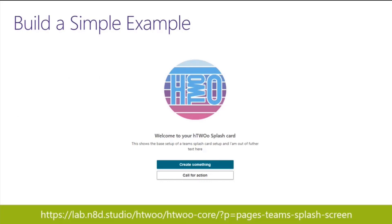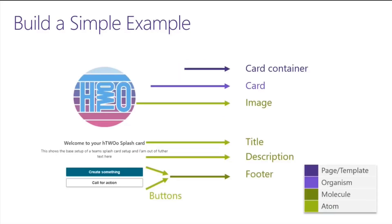The example I'm going to build is a Teams splash card designed by Stefan. It has multiple sub-components built on atomic design, which means each component is broken down into its smallest pieces. We have an image, title, description, and buttons — these are atoms. Two buttons together form the footer for the splash card, and the image, title, description, and footer together form the card in the card container. Those are the different levels of controls in the library.